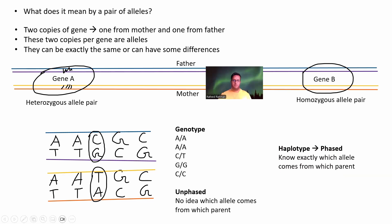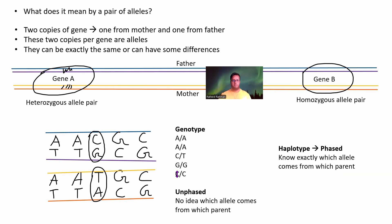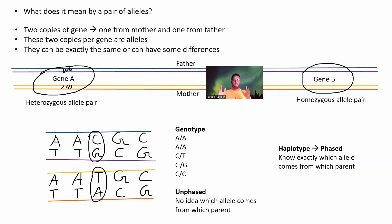Haplotype is a phased thing — here we know exactly which allele comes from which parent. So we know that, for example, AACGC comes from the father and AATGC comes from the mother. That is all about chromosome pairs, double-stranded DNA, alleles, genotype, and haplotype.